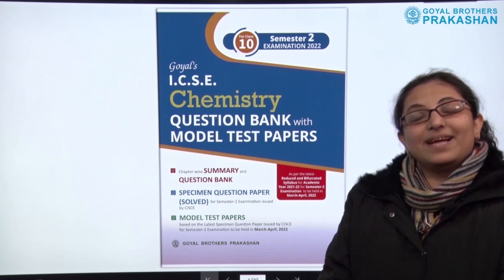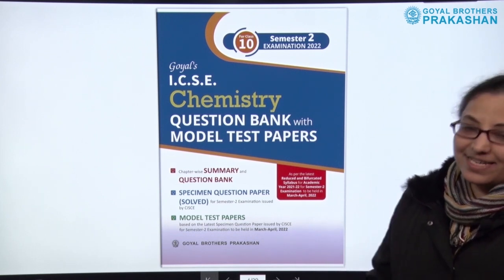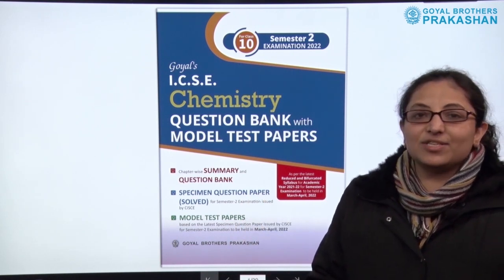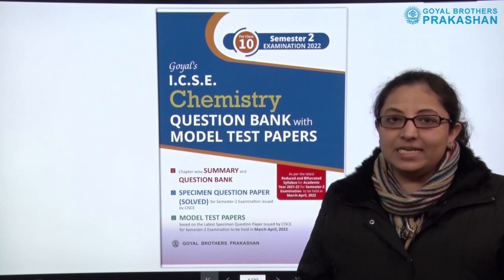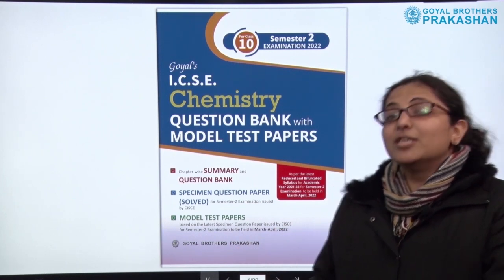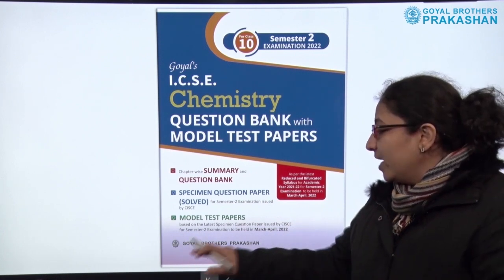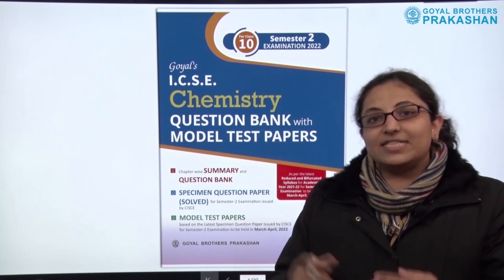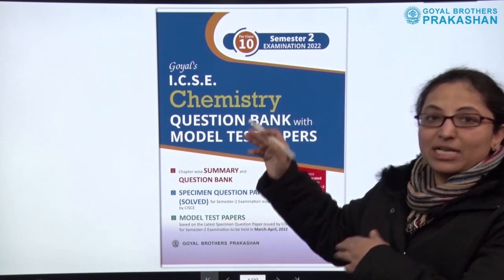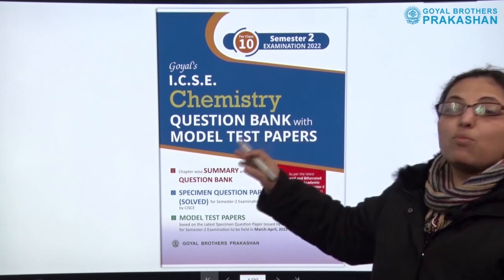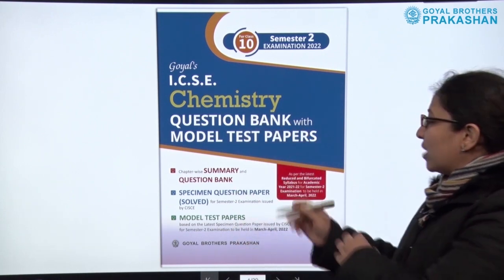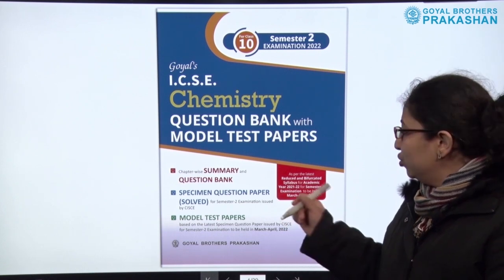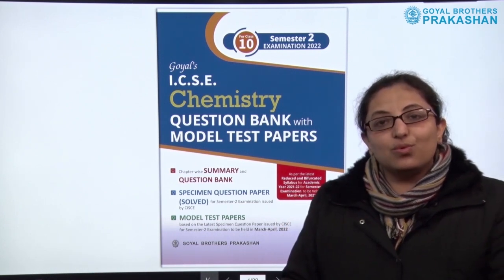Hello everyone. As you know, the council for the ICSC board has released a specimen question paper which is solved for semester two examinations, to be held this year in March and April. Based on that specimen question paper, Goyal Brothers publication have released a set of 12 different books in different subjects. This is the book for chemistry — a question bank with model test papers. This book is based on the latest reduced and bifurcated syllabus for academic year 2021-22 for semester two examinations.